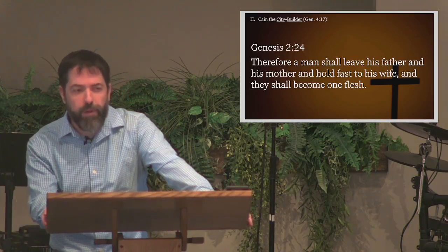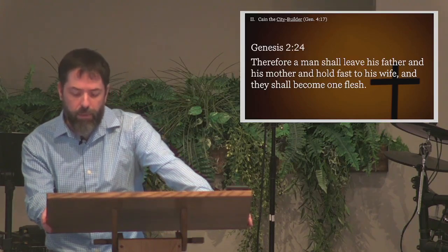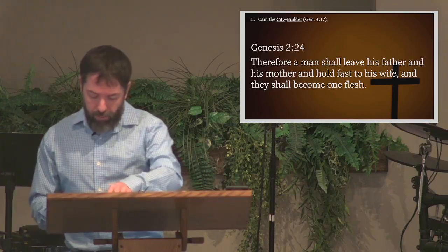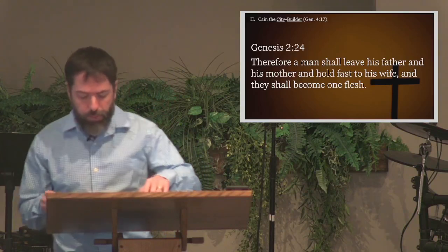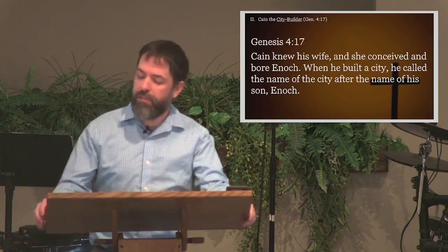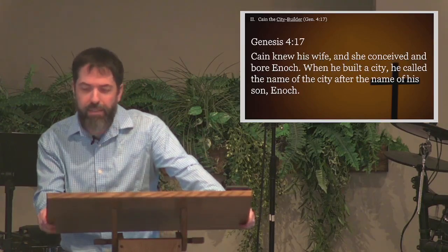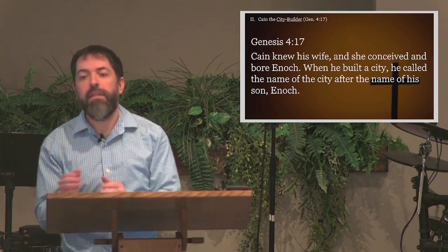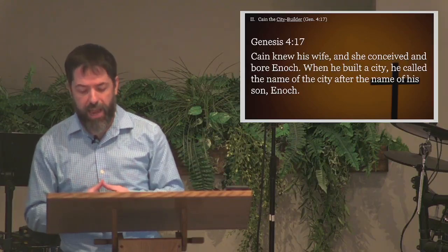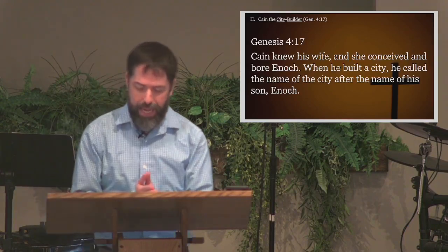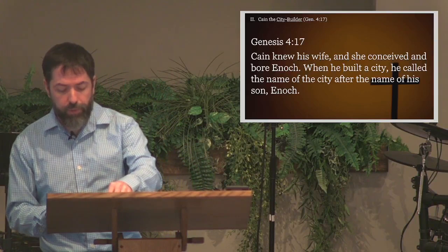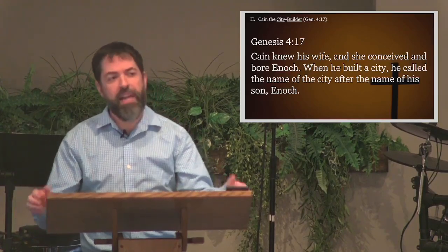The Lord had commanded Cain to wander, but he instead settles. But more than settling, we find him here building a city. Now, don't think a modern urban center like New York City when you read about cities in Genesis. Especially at this early stage, we're talking about something much more modest. The Hebrew word itself merely communicates a permanent settlement, generally protected with a wall or a tower or a fortress of some kind. Thus, Cain is here rejecting the promise of God to protect him.